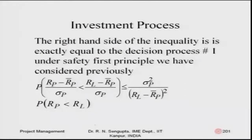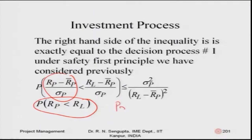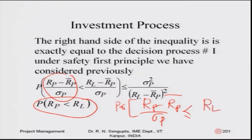The right-hand side of the inequality is exactly equal to decision process number one under the safety first principle. The probability that R_P minus R_P_bar divided by the standard deviation is less than or equal to R_L or R_F can be found using the standard normal table and solved accordingly. I will solve one or two simple problems later on.